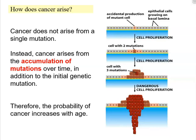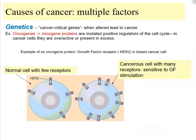Every time the cell divides, DNA is replicated, and mutations can occur. Starting with a mutant cell, after one round of replication we have another cell with another mutation. After further cell proliferation, we might have a cell with three mutations. This accumulation of mutations represents the actual dangerous cell proliferation that could be potentially malignant cancer.